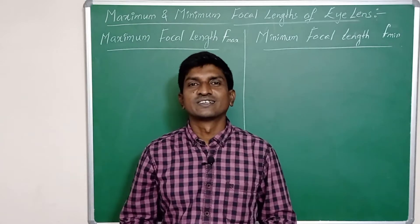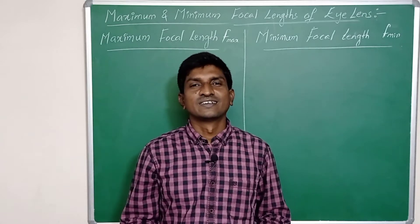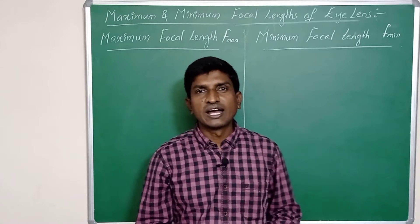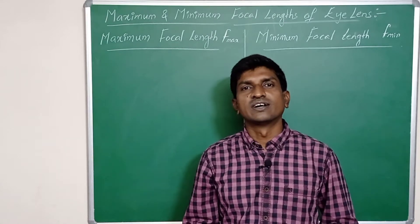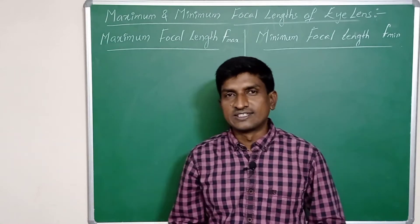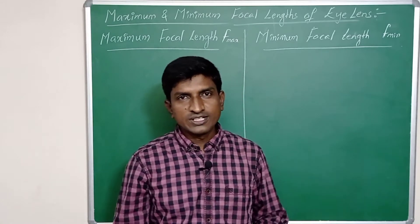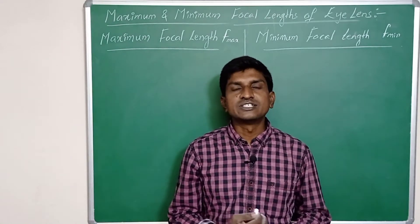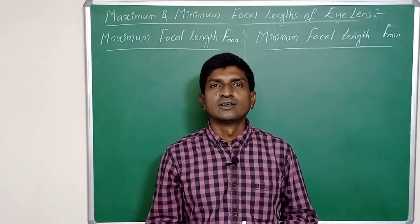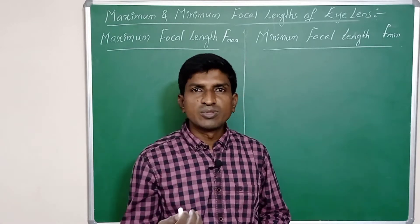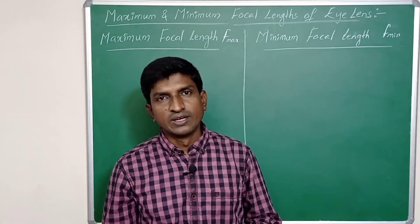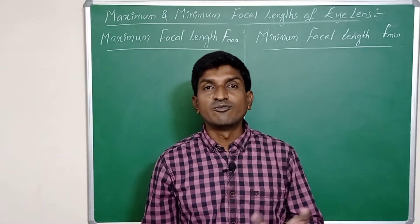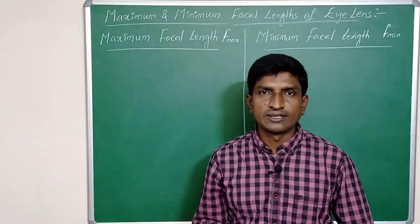Welcome students. In this video we will discuss the maximum and minimum focal length of the eye lens. We know that with the help of ciliary muscles the eye lens changes its focal length from maximum to minimum. We will determine when it gets maximum focal length and when it gets minimum focal length.